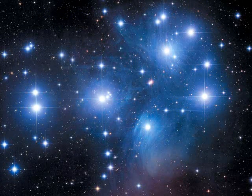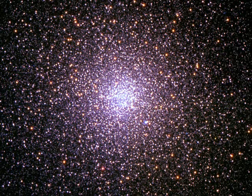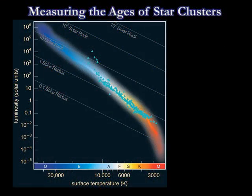One of the most famous open clusters is the Pleiades, a grouping of stars in the constellation of Taurus. 47 Tucanae is an example of a globular cluster — it's almost 17,000 light years away from Earth. What's really neat is that we can use star clusters as clocks. We can determine cluster ages by plotting their stars on an HR diagram.